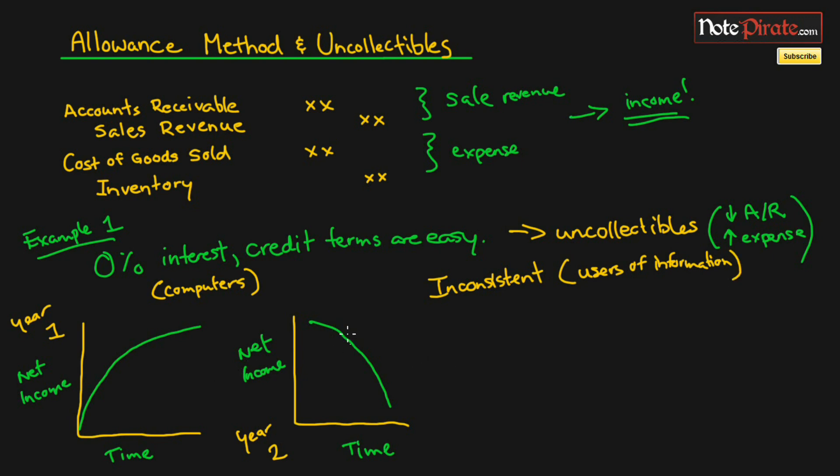To move away from this inconsistent way of doing things, we actually create this thing called the allowance method, which we're going to learn about in the next tutorial.